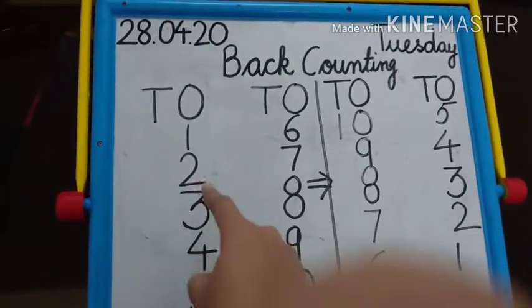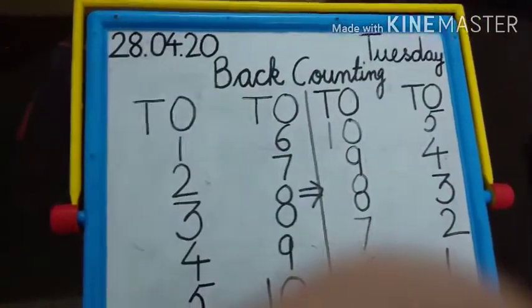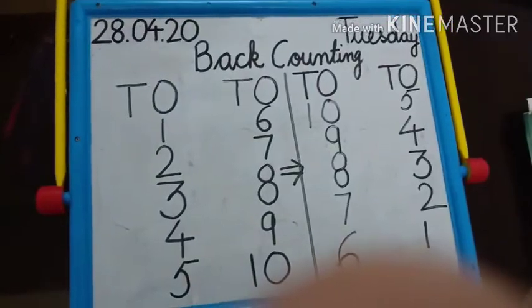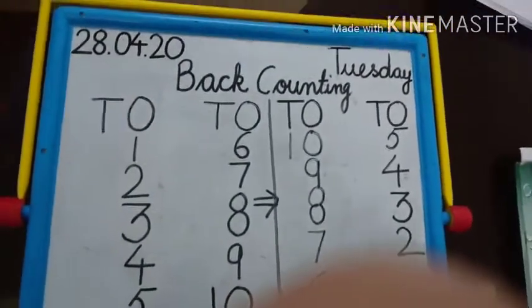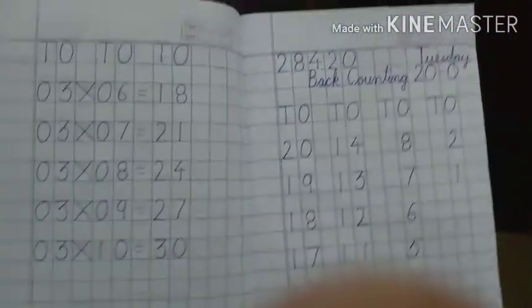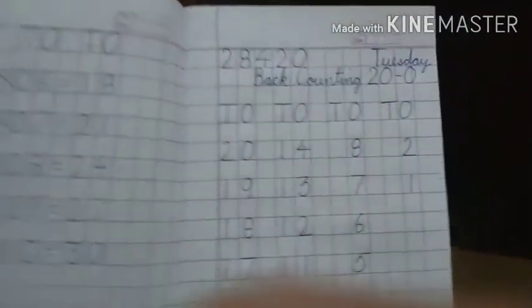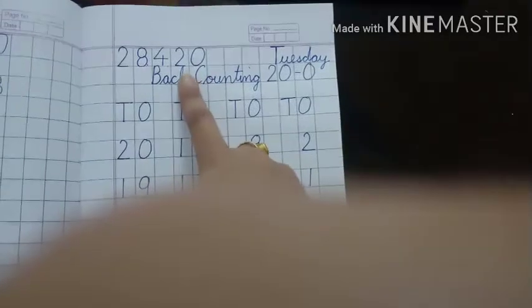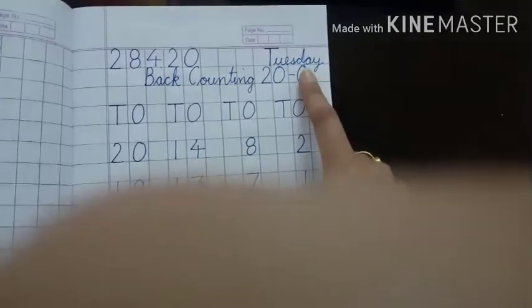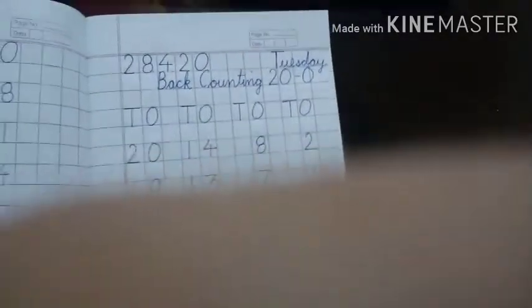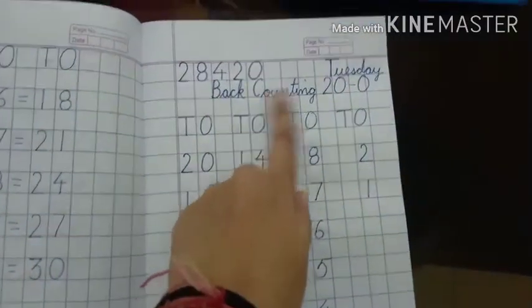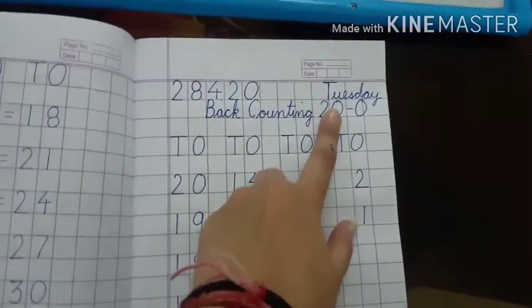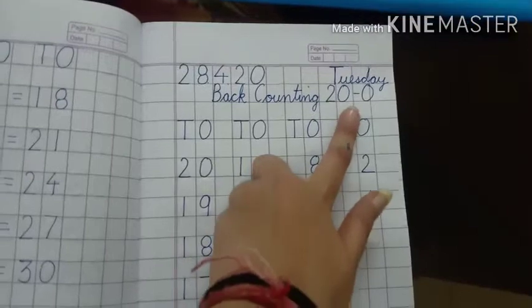Like this. Dekho, like this we are going to do in notebook. Which counting? Back counting from 20 to 0. How we are going to do back counting? First of all write the date, then day, then what you will write - back counting 20 to 0 heading. Then 'to, to, to, to' four times. Then how you will start?